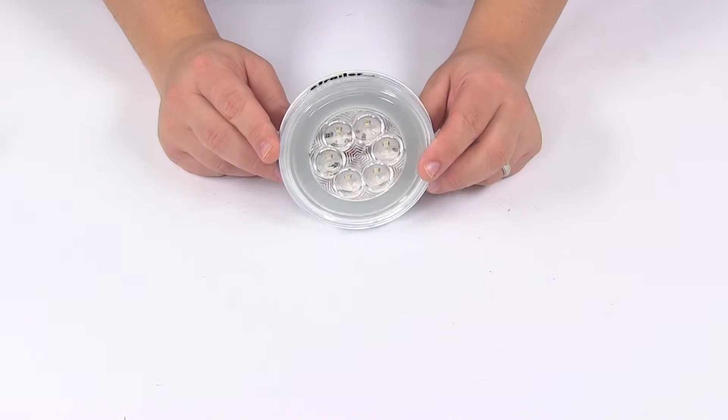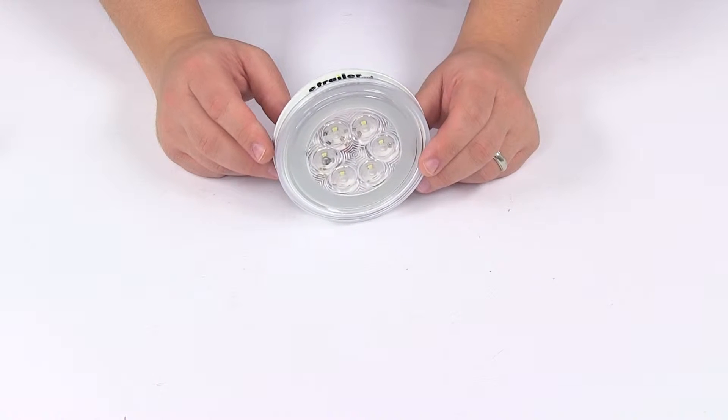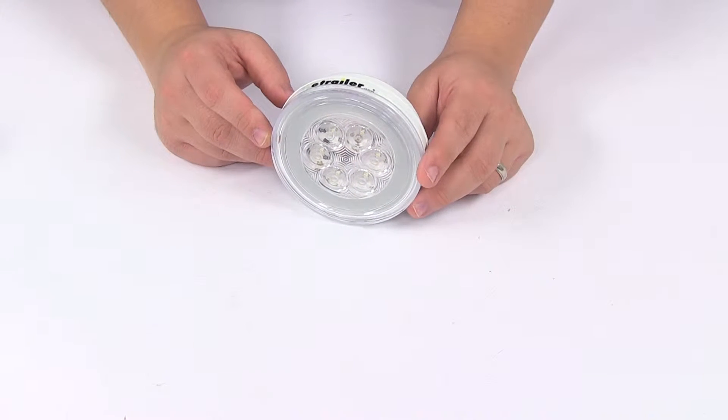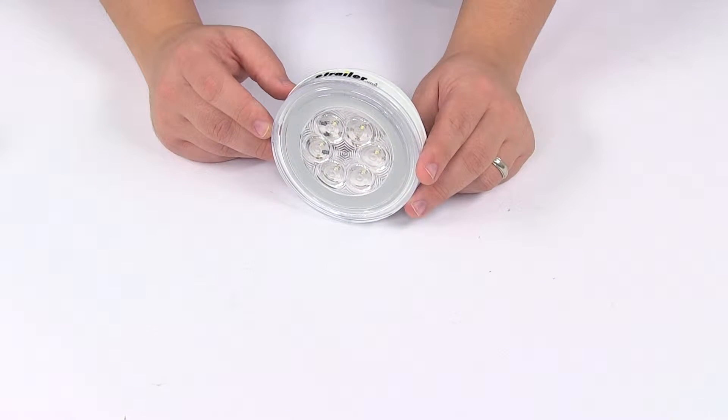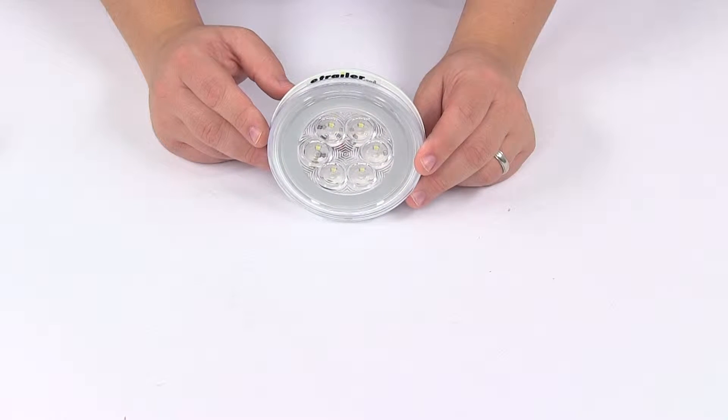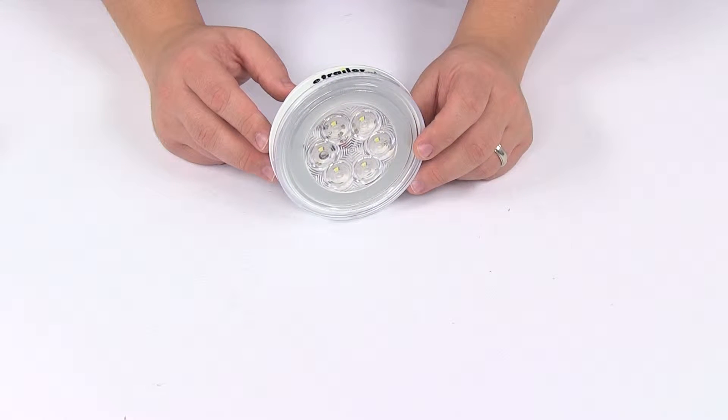Today we're taking a look at the Optronics Glow Light LED round backup light. This is designed for trailers and utility trucks. It is certified for the backup light function in a two-lamp system. When a pair of lights is installed, your second light would be sold separately.